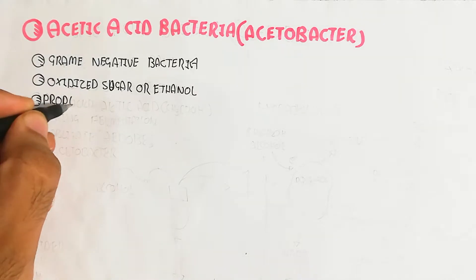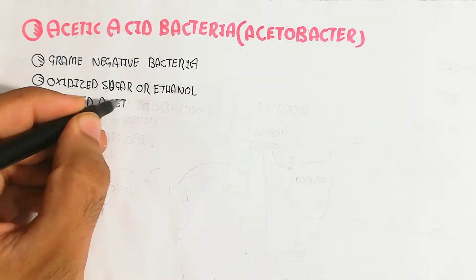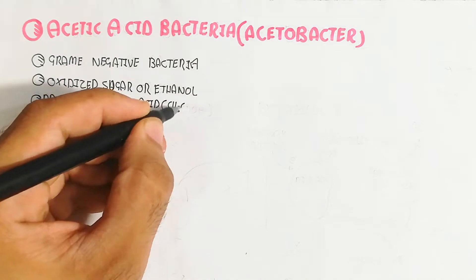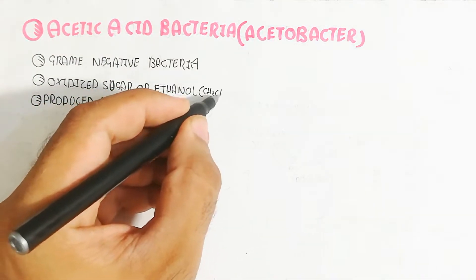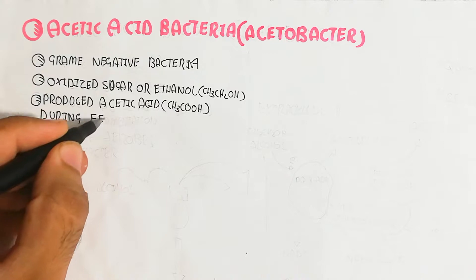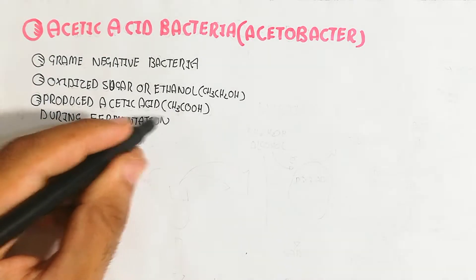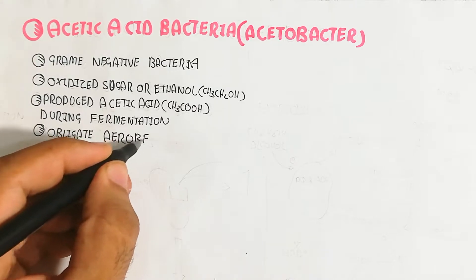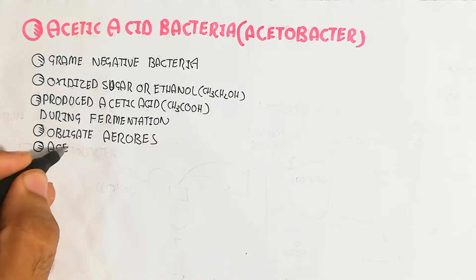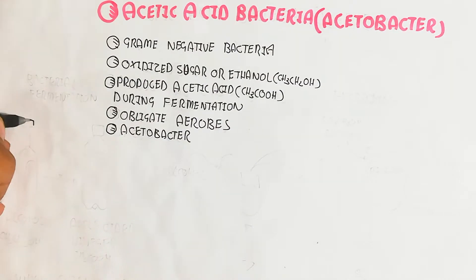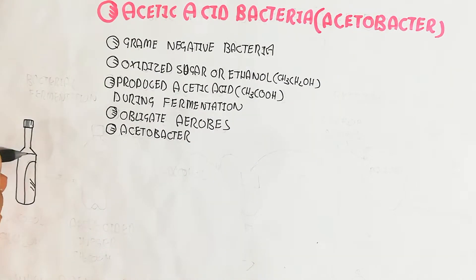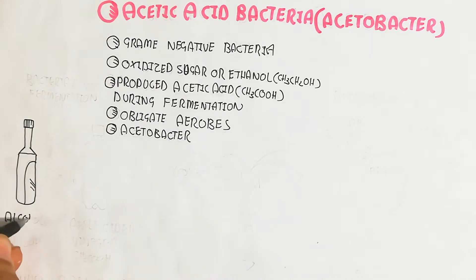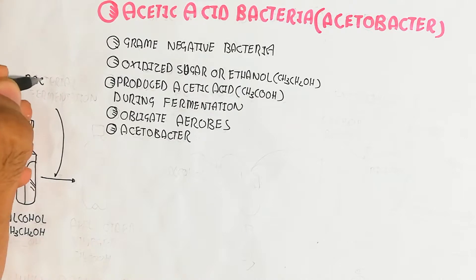Acetobacter converts ethanol (CH₃CH₂OH) into acetic acid (CH₃COOH). During fermentation it produces acetic acid, and this fermentation is obligate aerobic — meaning acetobacter requires oxygen to carry out this process.